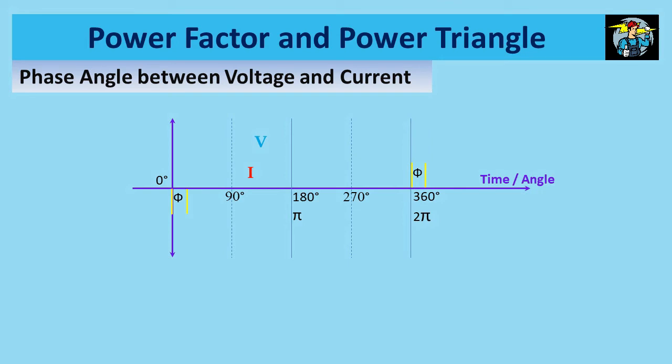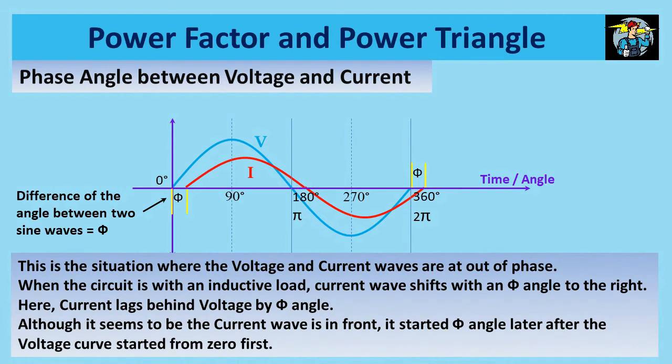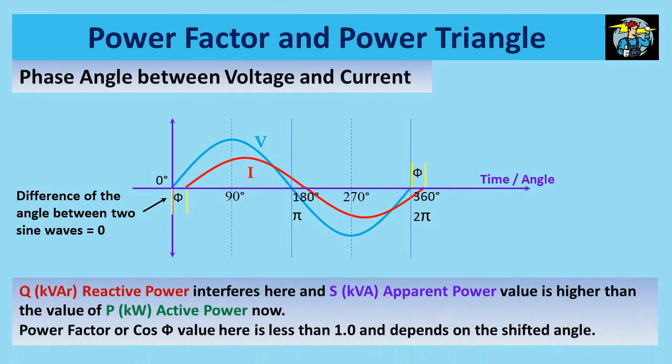Let's see what happens to the voltage and current curves when there is an angle difference between them. Here the current sine wave starts phi angle later after the voltage curve starts. This is the situation where the voltage and current waves are out of phase. When the circuit is with an inductive load, current wave behaves like this and shifts with an angle to the right. Here current lags behind the voltage by phi angle. Although it seems the current wave is in front on a diagram, it started phi angle later after the voltage curve started from zero first, hence is lagging one. Reactive power Q involves here and interferes to move apparent power S higher than the active power P now. Power factor or cos phi value here is less than 1 and depends on the shifted angle.